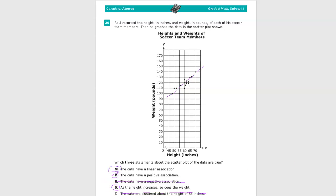So the answers, again, are, they are linear. So the data has a linear association. So that's M. They're positive. So P works just fine. They're not negative. And the height increases, so does the weight.